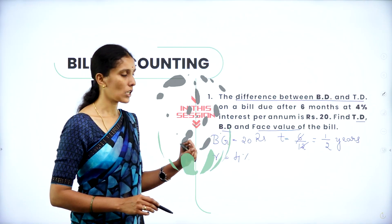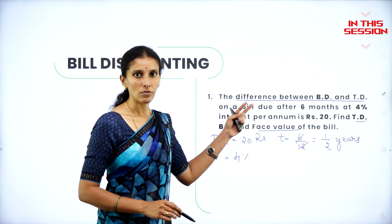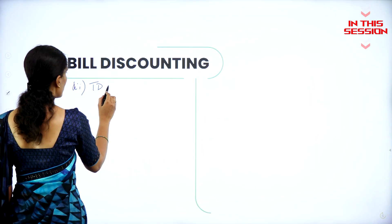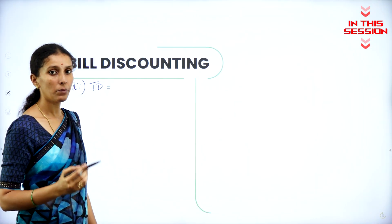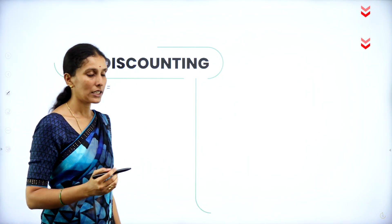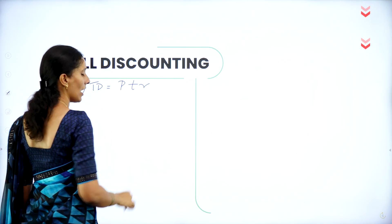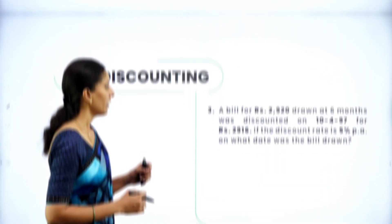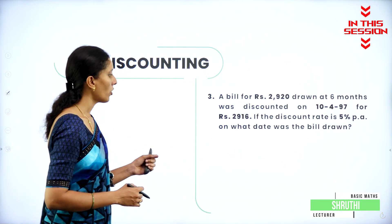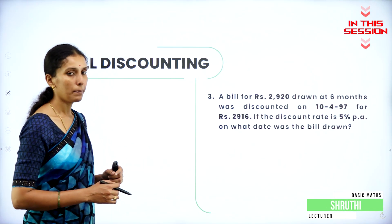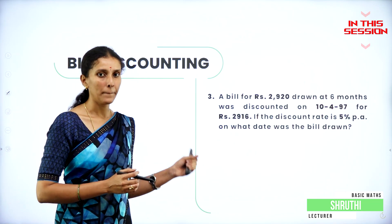How to find out the true discount, banker's discount, as well as face value of the bill. What is the formula for true discount whenever the present value is given? That is P into T into R. If the discount rate is 5% per annum, on what date was the bill drawn? So we have to find the drawing date of the bill.